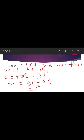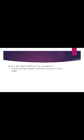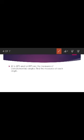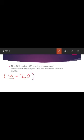The second question in practice set 16 is: y minus 20 degrees and y plus 30 degrees are the measures of complementary angles — find the measures of each angle. I will set up the equation and you need to solve it. Since the two angles are complementary, their sum equals 90: y minus 20 plus y plus 30 equals 90.